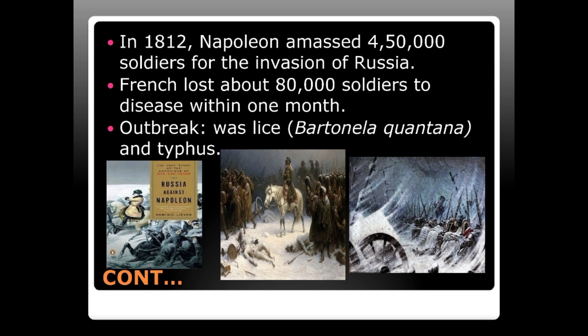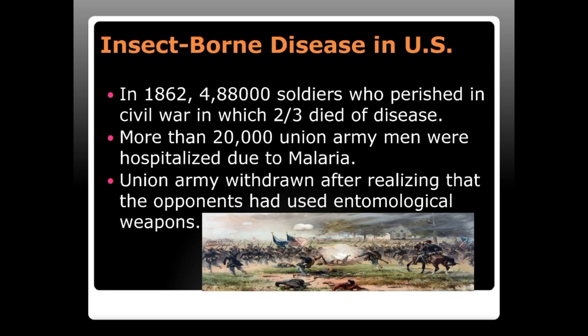Insect-borne disease was a major factor in the United States Civil War. In 1862, of the 488,000 soldiers who perished, two-thirds died of disease rather than battle. More than 20,000 Union Army men were hospitalized due to malaria, and the Union Army withdrew after realizing that opponents had used entomological weapons — the primary outbreak being mosquito-borne disease.